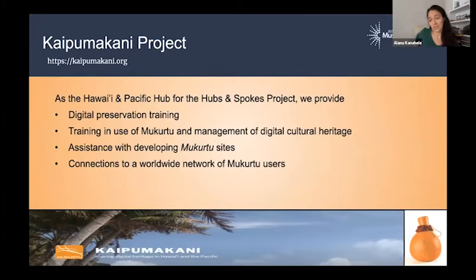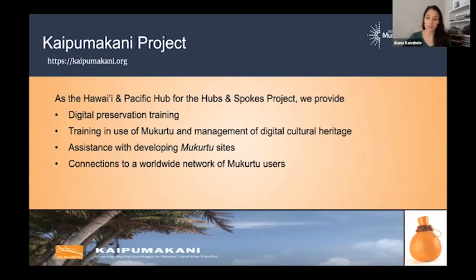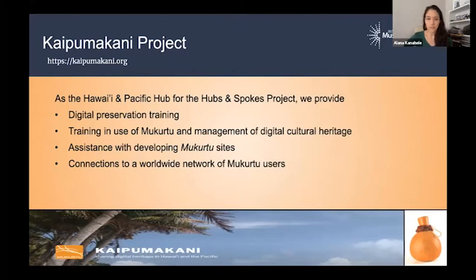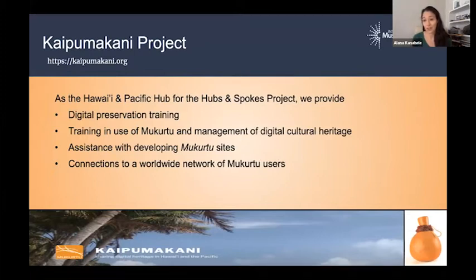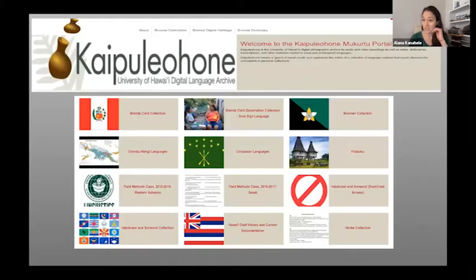Mukutu is being used throughout the world. There are hubs in Australia, hubs across the US, and about 3,500 communities are using it right now. I'm the hub manager for the Hawaii and Pacific communities. Most of my work has been primarily in the Federated States of Micronesia, Marshall Islands, Guam, American Samoa, recently the Solomon Islands, and various parts of Australia. Our project provides digital preservation training, teaches people how to use Mukutu — all free — and assists with development of sites. For this presentation, I wanted to show how Mukutu is being used in various communities throughout the Pacific.